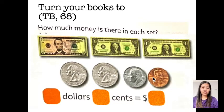How much money is there in each set? Again, we have $5, $1, and another dollar. And here, we have different coins. We have a dime, a penny, and quarters. So let's start counting the paper money first, because those are in dollars. The answer is... Yes, 7.